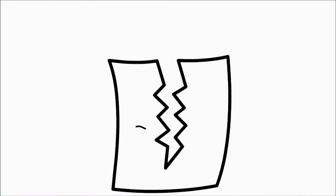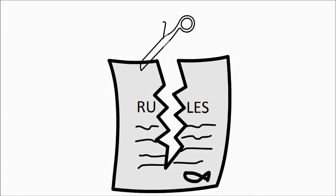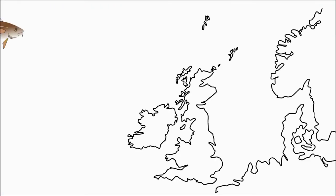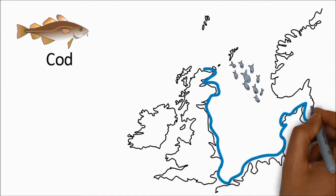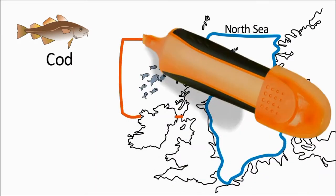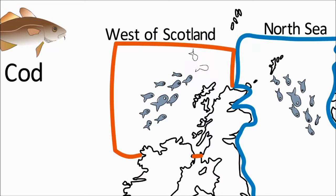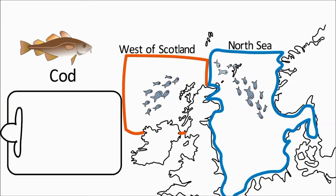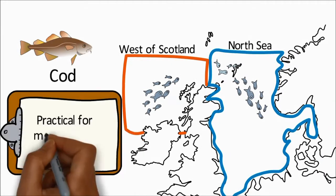In some cases, these simple rules are challenged as the stock boundaries don't always match the biology of the fish population. For example, in Scotland there are two stock assessment areas for cod, the North Sea and the West of Scotland. But cod in these two areas aren't separate biological populations and the boundaries have instead been drawn in a way that is most practical for the management of the fisheries.